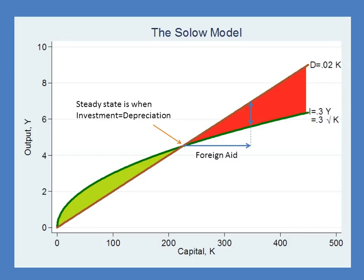Factories were built in Ghana and they began to fall apart, and no one replaced them. Roads started to crumble. Even the infrastructure left over from the colonial period started to decline. Because of this, countries were pushed back towards their steady state level of capital, their steady state level of GDP. So from the Solow model, if you don't improve any of the fundamental factors — organization, technology, investment — an increase in foreign aid is just going to create depreciation and put you back to your steady state.